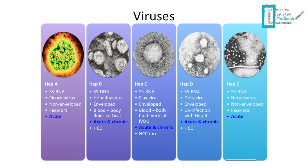I'm going to talk about these viruses in pairs for comparison. Starting with hepatitis A and hepatitis E: both are single-stranded RNA viruses, both are non-enveloped, and the mode of transmission is the feco-oral route. They can both cause only acute infection. An important point about hepatitis E is that it can lead to fulminant hepatitis in pregnant women.